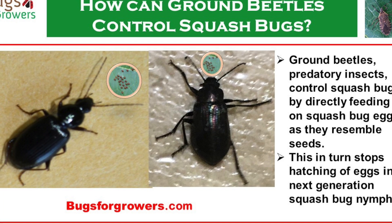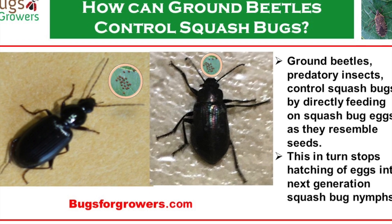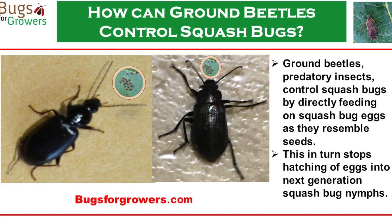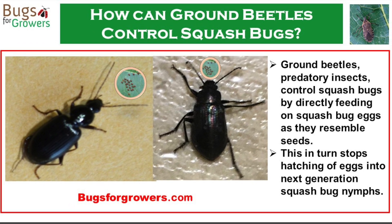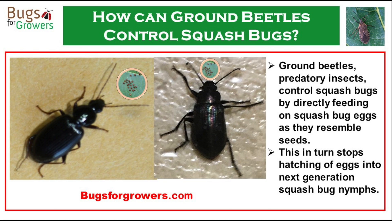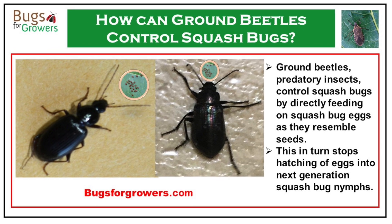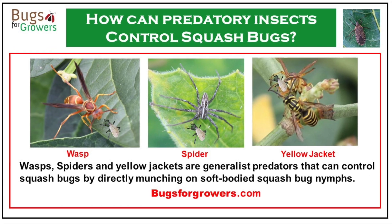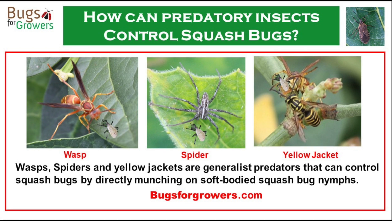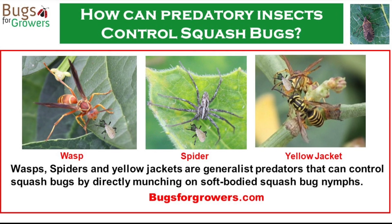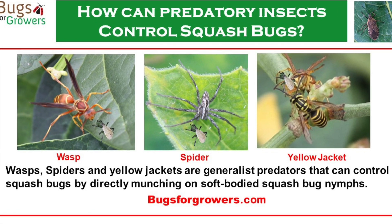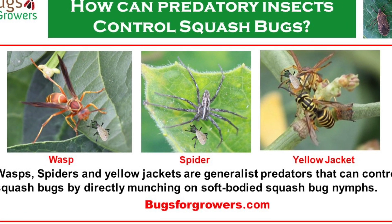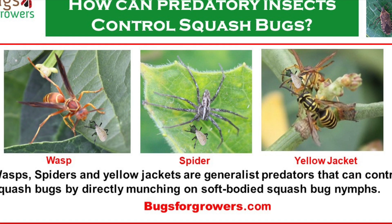Ground beetles prey directly on squash bugs, eggs and nymphs, reducing squash bug populations. Spiders, wasps and yellow jackets also feed on eggs and nymphs, contributing to population control.